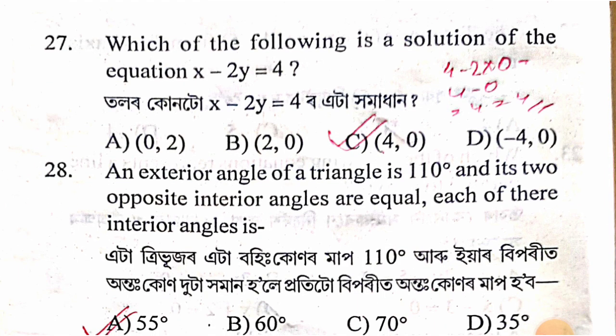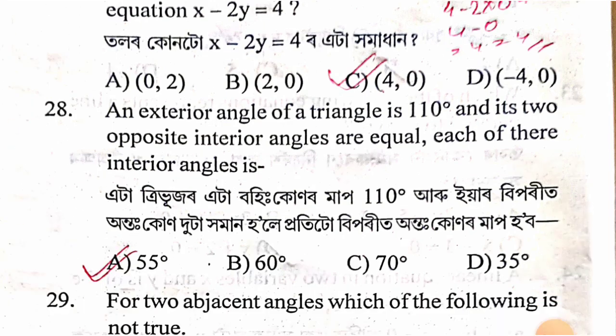An exterior angle of a triangle is 110 degrees and its two opposite interior angles are equal. Each of those interior angles is 110 ÷ 2 = 55 degrees.